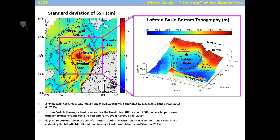The Lofoten Basin is a topographic depression with depths up to 3200 meters in the center. The coast of Norway and the continental shelf and slope bound it, along with several ridges on the other side. The circulation is governed by the Norwegian Atlantic Current, a continuation of the North Atlantic Current that brings warm and saline water into the Nordic Seas — a generic term for the Greenland, Norwegian, Iceland, and sometimes Barents Sea. The Lofoten Basin features a local maximum of sea surface height variability and eddy kinetic energy, making it a hotspot of oceanic variability.